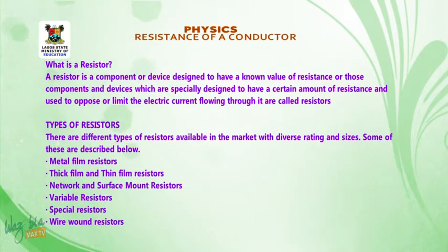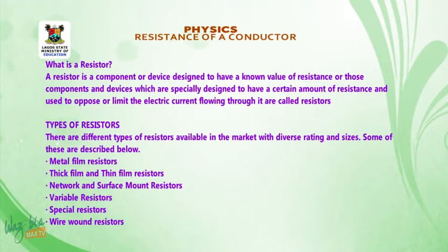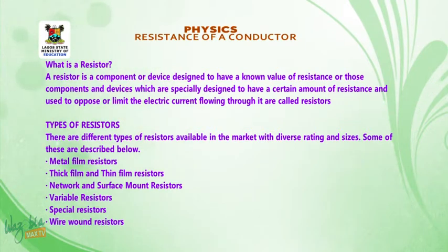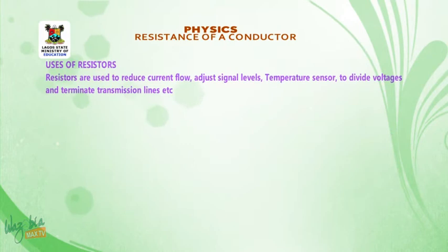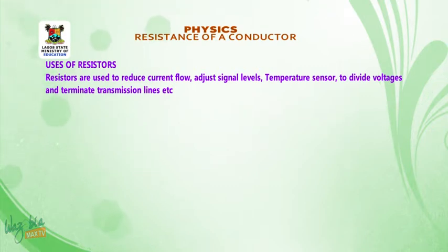Types of resistors: we have various types based on their markings, sizes, or rating — including metal film resistor, thick film and thin film resistors, network and surface mount resistors, variable resistors, special resistors, and wire-wound resistors. A resistor can be used to reduce or limit current flow, to adjust signal level, as a sensor, to divide voltage, and to terminate a transmission line.